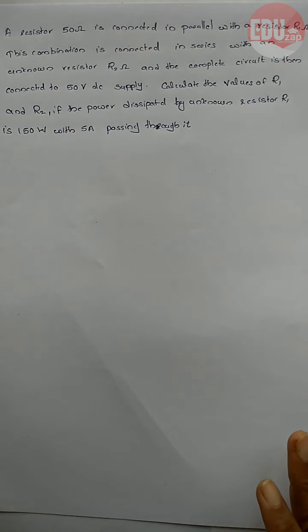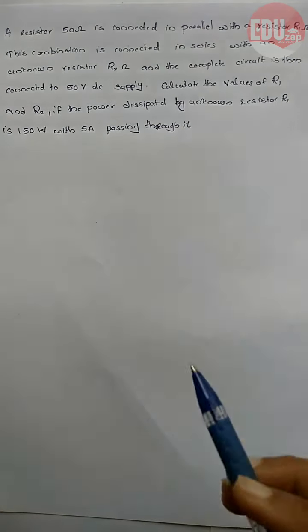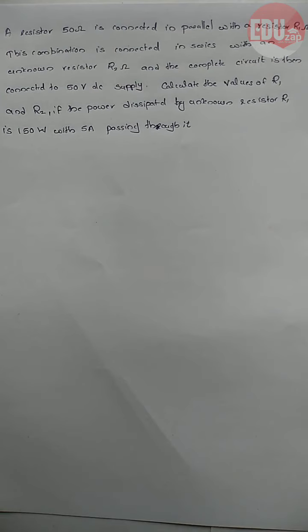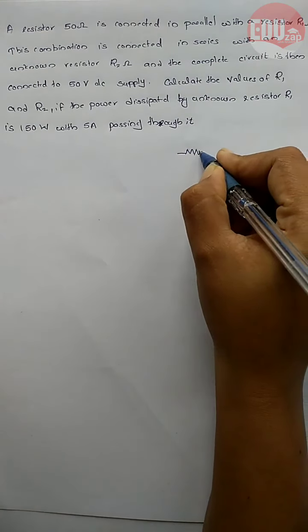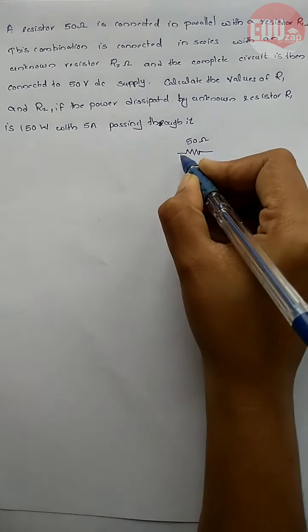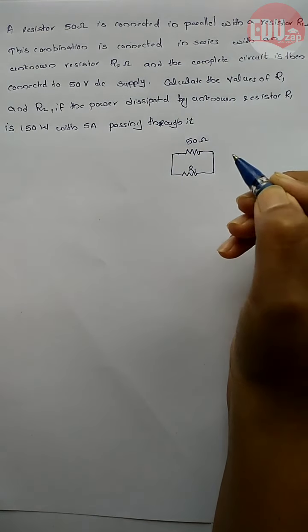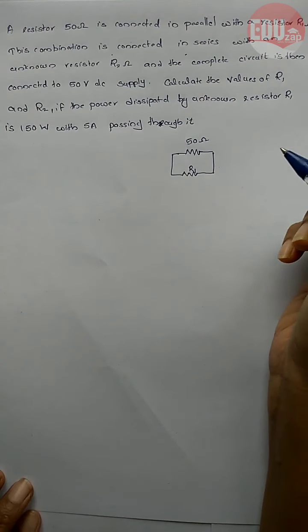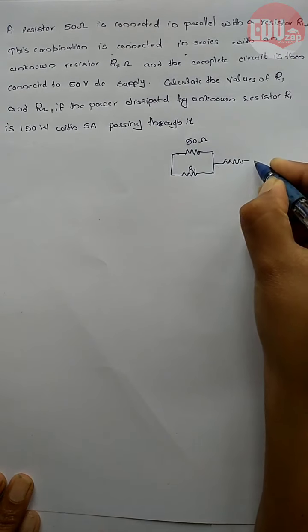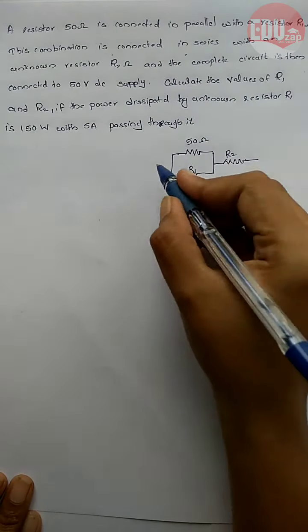This is our second university question asked in July 2017. The question states that a resistor of 50 ohm is connected in parallel with a resistor R1 ohm. I am drawing it — we have a 50 ohm resistor connected in parallel with another resistor R1 ohm. This combination is then connected in series with an unknown resistor R2.